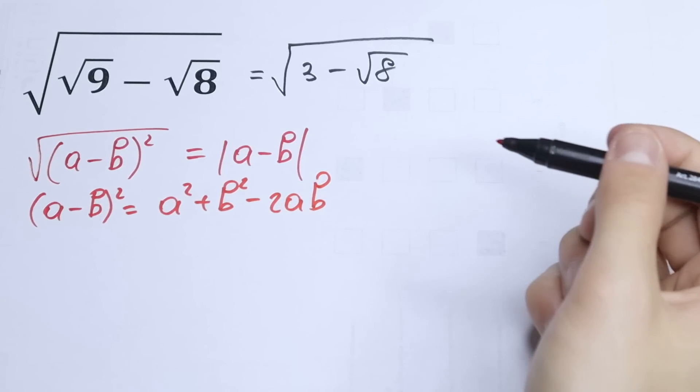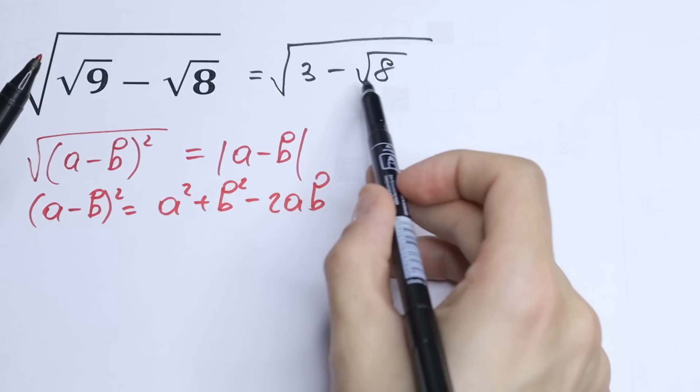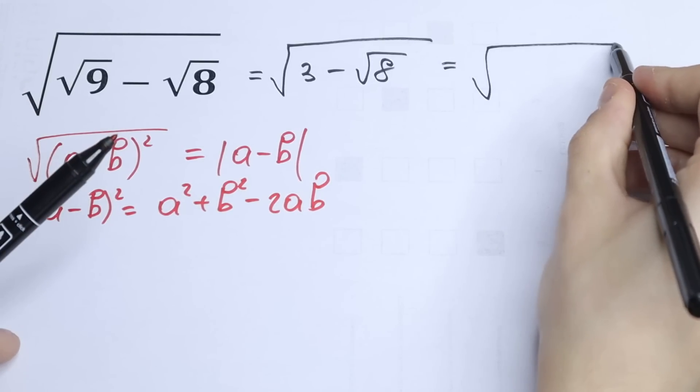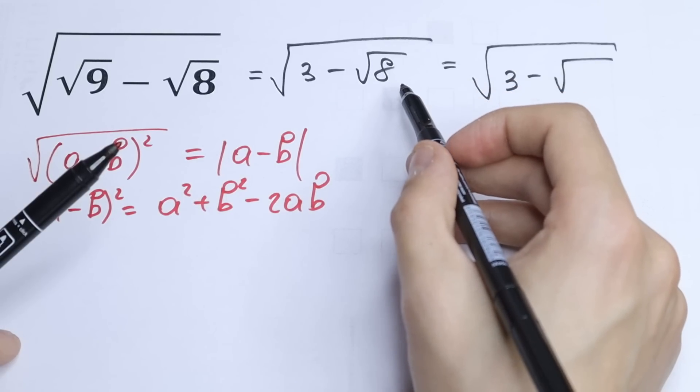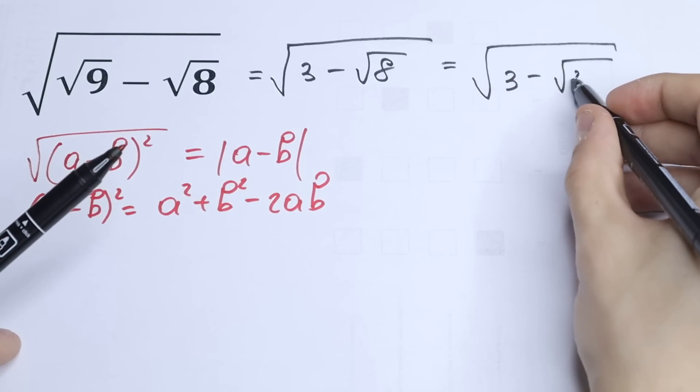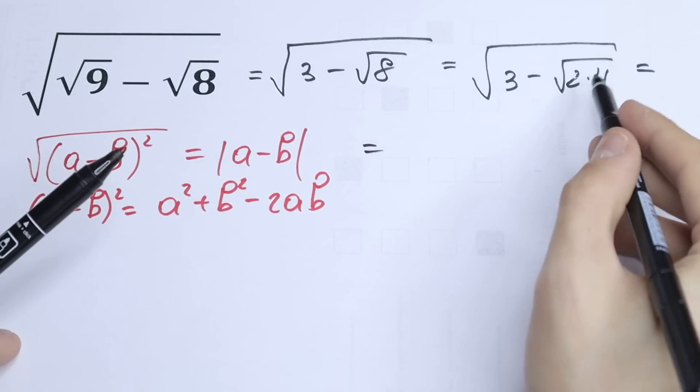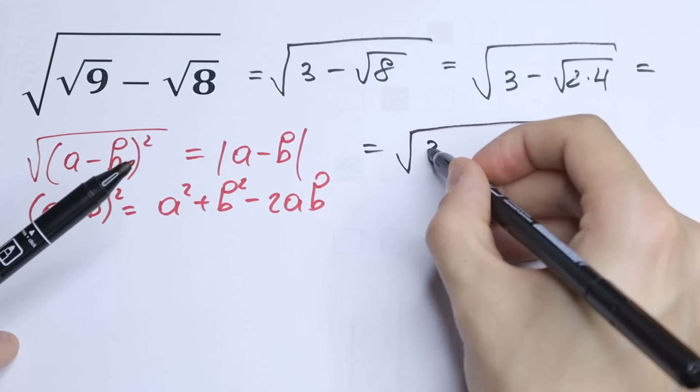So, as you can see right here, we can take 2 from this square root. But how can we do this? We can write this 8 as -√8. And we can write this 8 as 2 times 4, of course. What we are going to do next? Let's take this √2. And then we will have √(3 - 2√2).